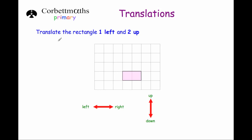Here's a typical question: translate the rectangle one square left and two squares up. Just to remind you — this way is to the left, this way is to the right, up is obviously up and down is obviously down.